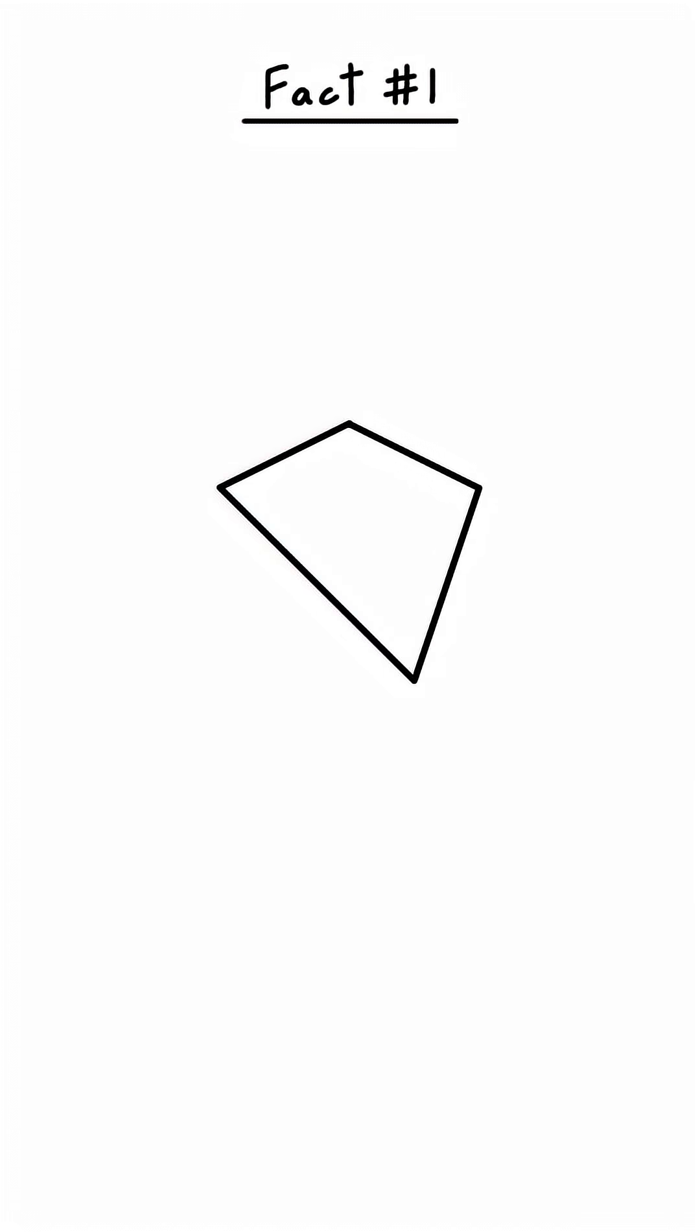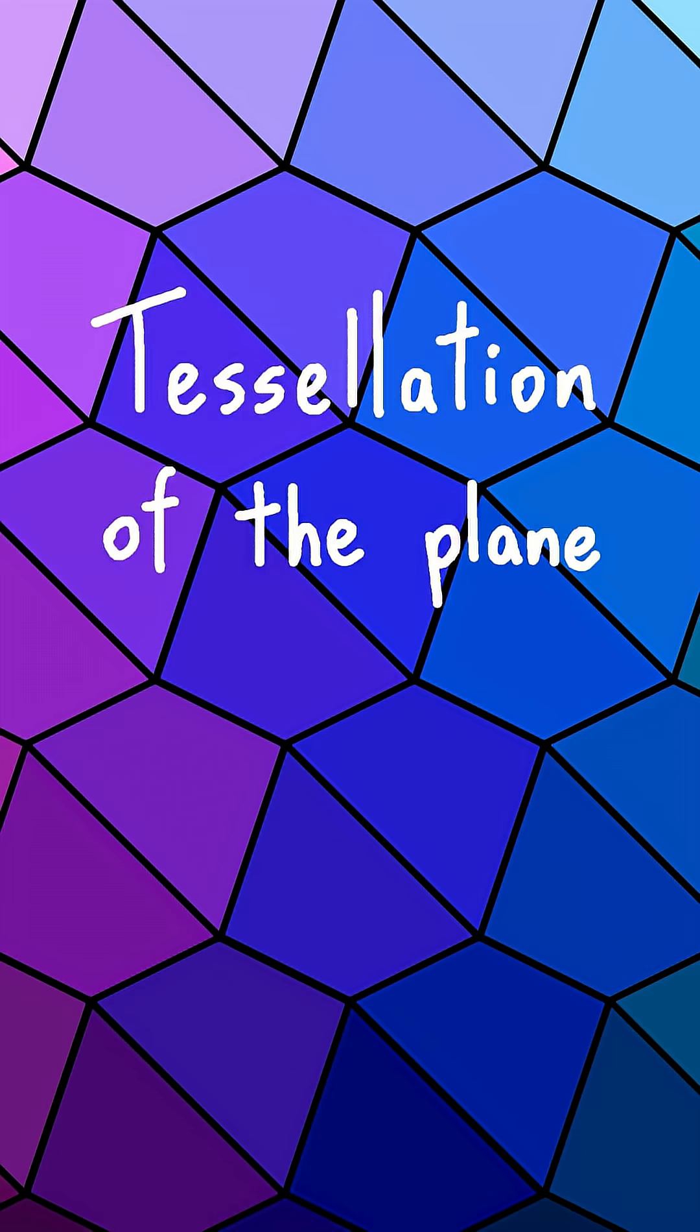First fact, every single quadrilateral can cover a flat surface with infinite copies of itself, leaving no gaps in between. This is called a tessellation of the plane.